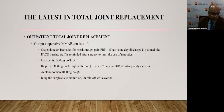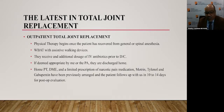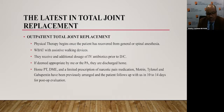Our postoperative analgesia program consists of oxycodone or tramadol for breakthrough pain. When same-day discharge is planned, PACU nursing staff is reminded to limit narcotic use. We use gabapentin 300 mg three times a day, ibuprofen 800 mg three times a day with food, plus a PPI if the patient has a history of dyspepsia, and acetaminophen 1,000 mg every eight hours. We recommend icing the surgical site 20 minutes on, 20 minutes off while awake. Physical therapy begins once the patient has recovered from anesthesia. Weight-bearing is tolerated with assisted walking devices. They receive an additional dose of IV antibiotics and tranexamic acid prior to discharge. If approved, they are discharged home with home PT, DME, and limited narcotic prescriptions, following up in 10 to 14 days.